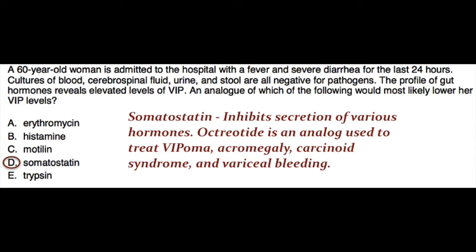VIP is a neurotransmitter in the brain and in the parasympathetic nerves of the digestive tract. It also acts as a hormone. VIP has a secretin-like effect on the pancreas — it increases the volume of water and bicarbonate output and affects GI blood flow and motility. All this contributes to severe secretory diarrhea in the case of VIP overproduction.